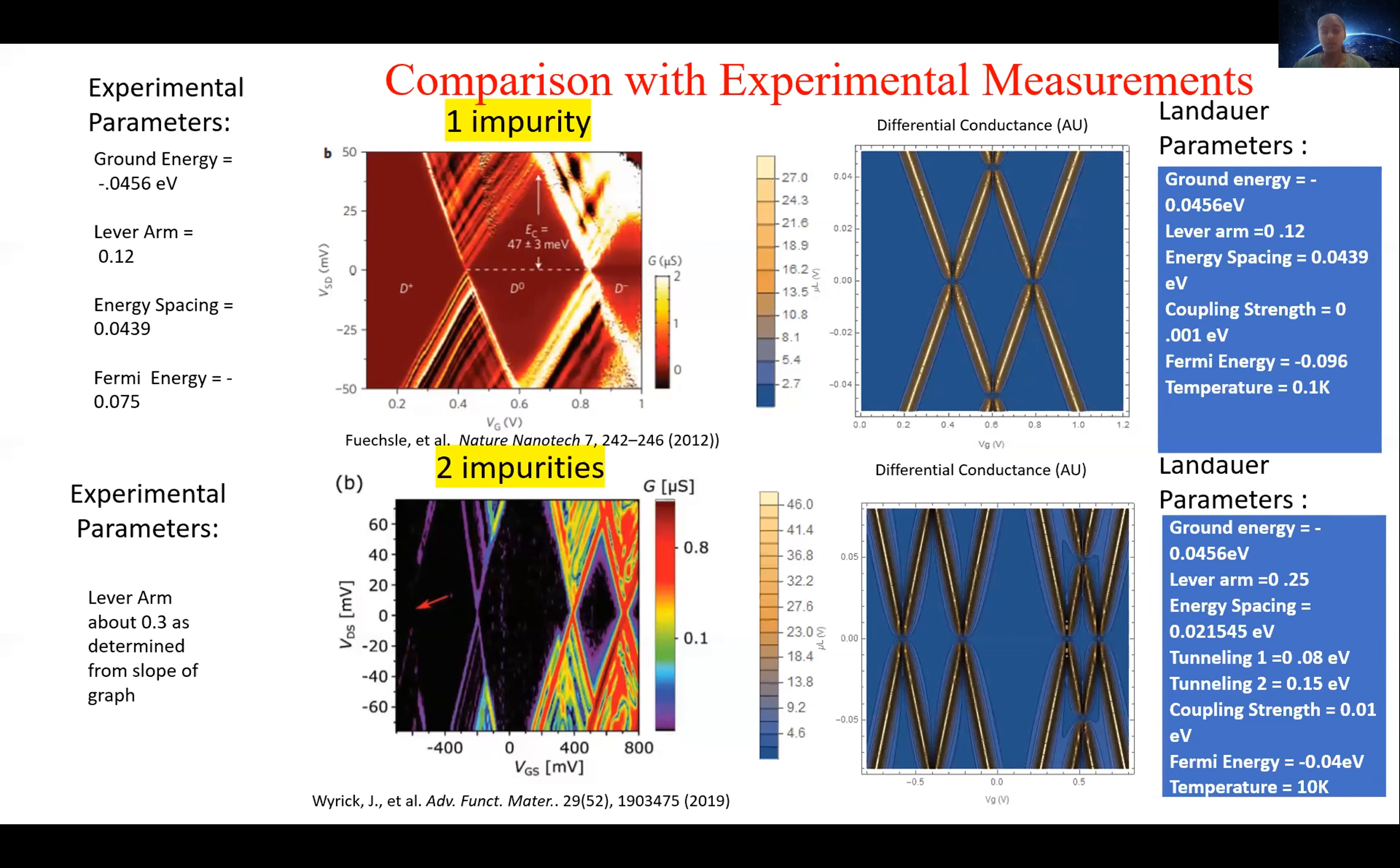In the two impurity system, we start with many of the same parameters as in the one atom system, and we have the energy spacing and introduce two new tunneling parameters. So this helps us understand how the introduction of another atom affects the Coulomb repulsion, and also how the different energy levels within the two atoms couple to different extents.